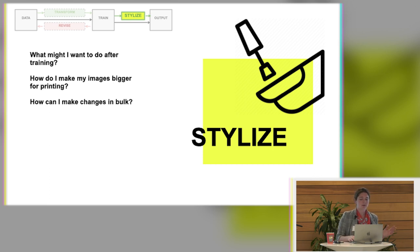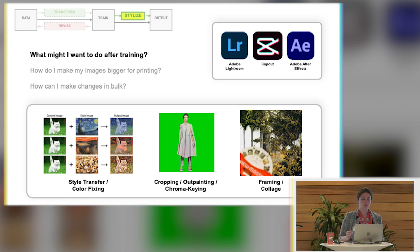And then once you've trained, you might want to do some stylization. So that could involve things like applying style transfer to outputs. Cropping, outpainting, chroma keying. So chroma keying is just green screening. This was that fashion model that I mentioned before. Or I wanted the output video to also have a transparent background. So I actually put a green screen in and then removed it in post-process. Or also thinking about framing and collage, things like that.